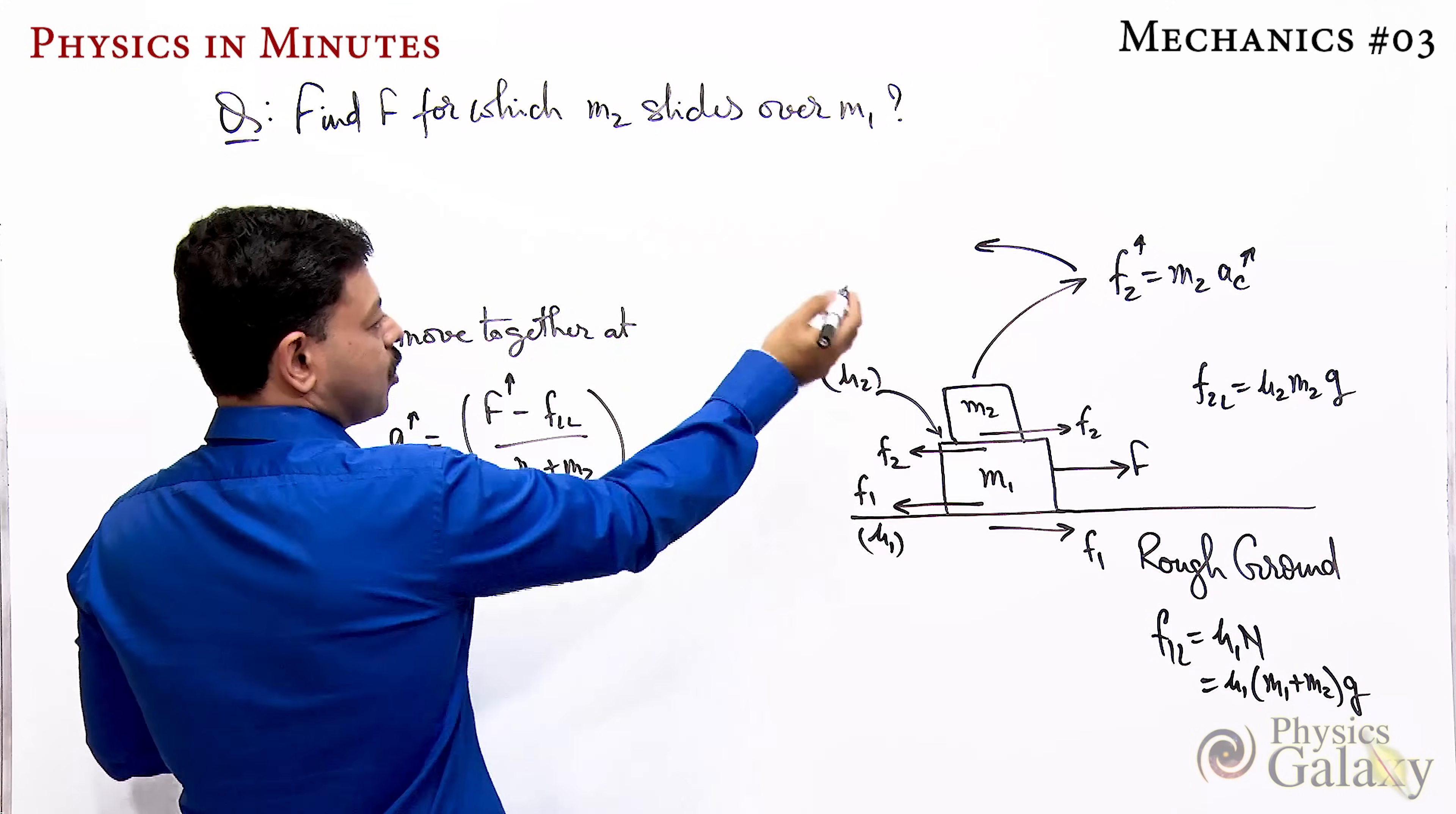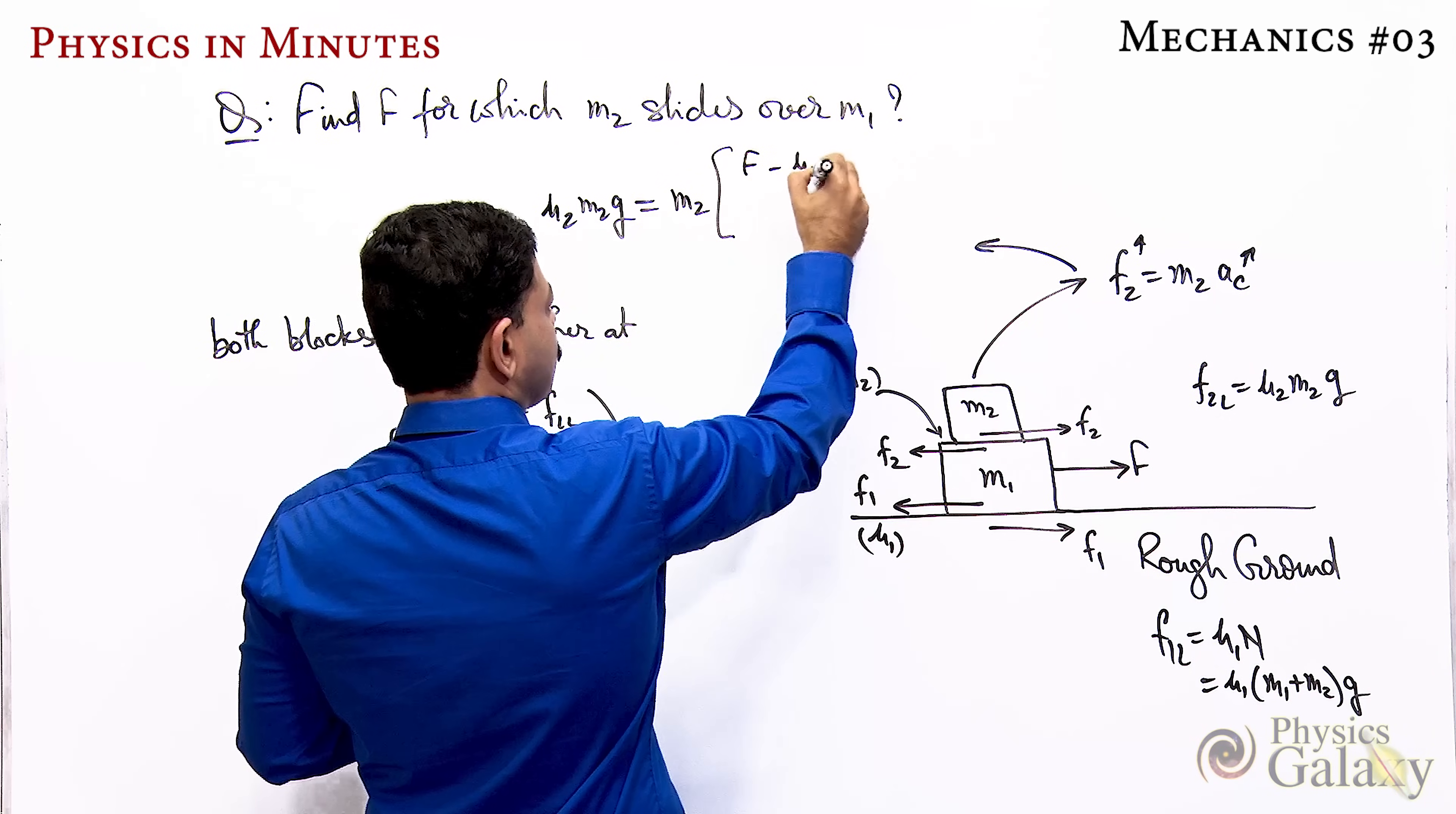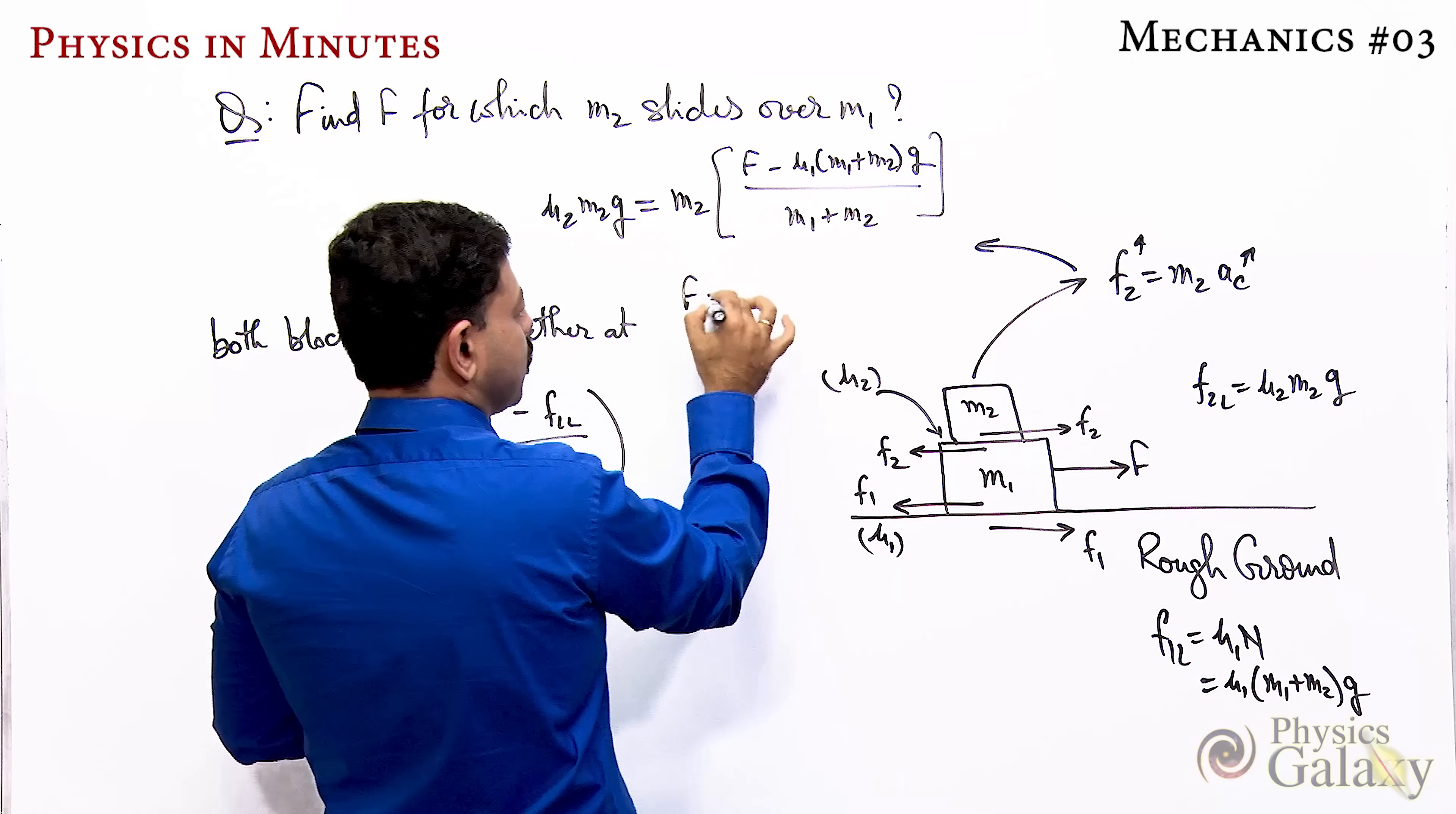The situation is over. You can write μ2 m2 g equals m2 times common acceleration. We can write [F - μ1(m1 + m2)g] divided by (m1 + m2). That's it. Solve this and you'll get the force. This is the final result of the situation.